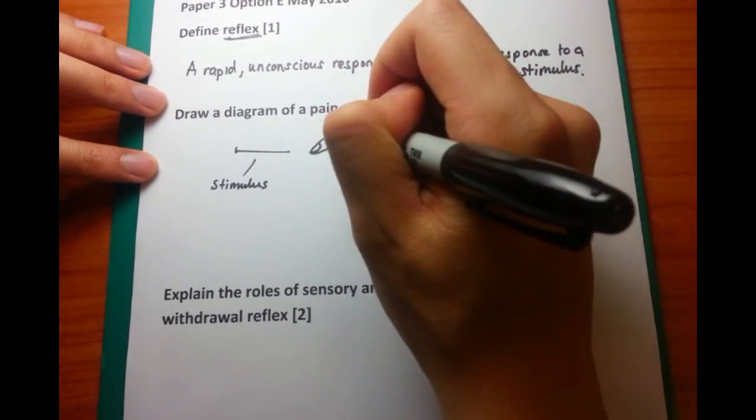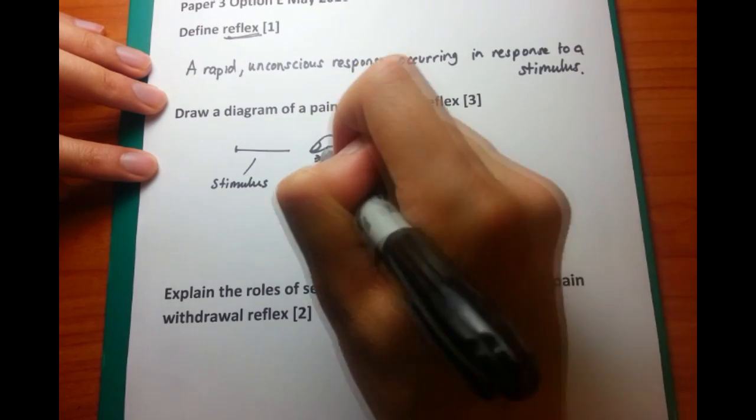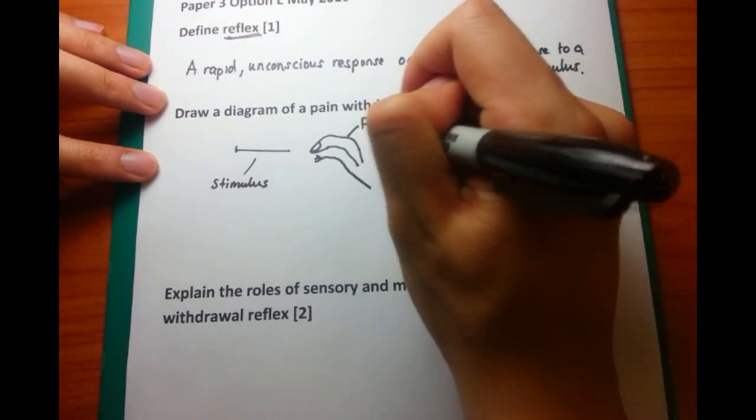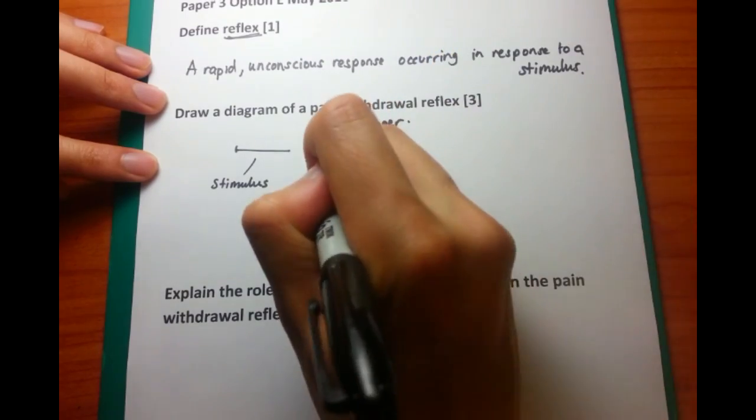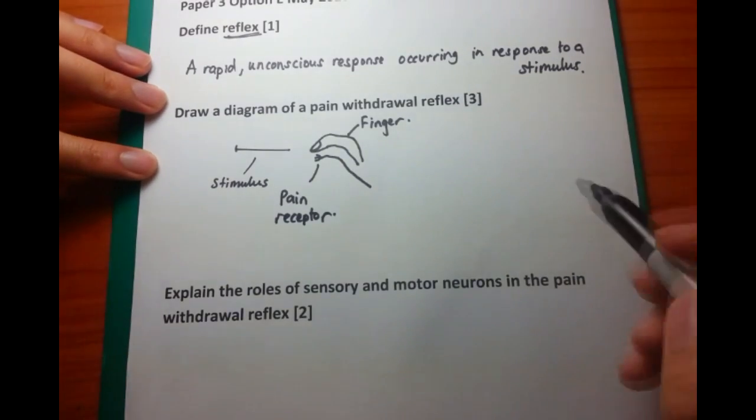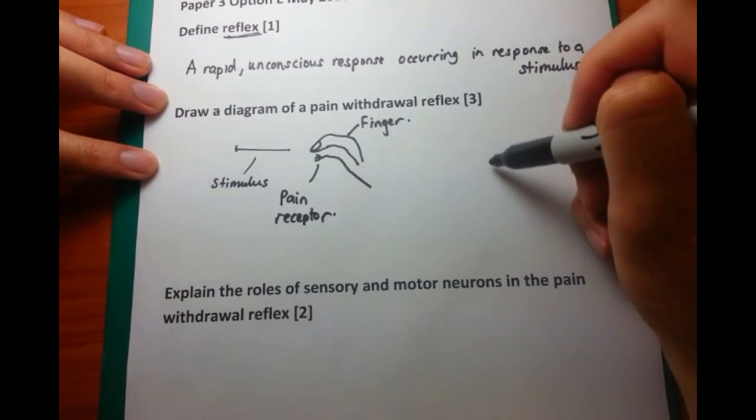And I always start with the sensory side. Now I'm an artist, so I've drawn a lovely picture of a finger there. And within the finger itself, you've got some of the sensory receptors or the pain receptors in the pain withdrawal reflex. And these feed along a sensory neuron, which then synapses within the spinal cord itself.